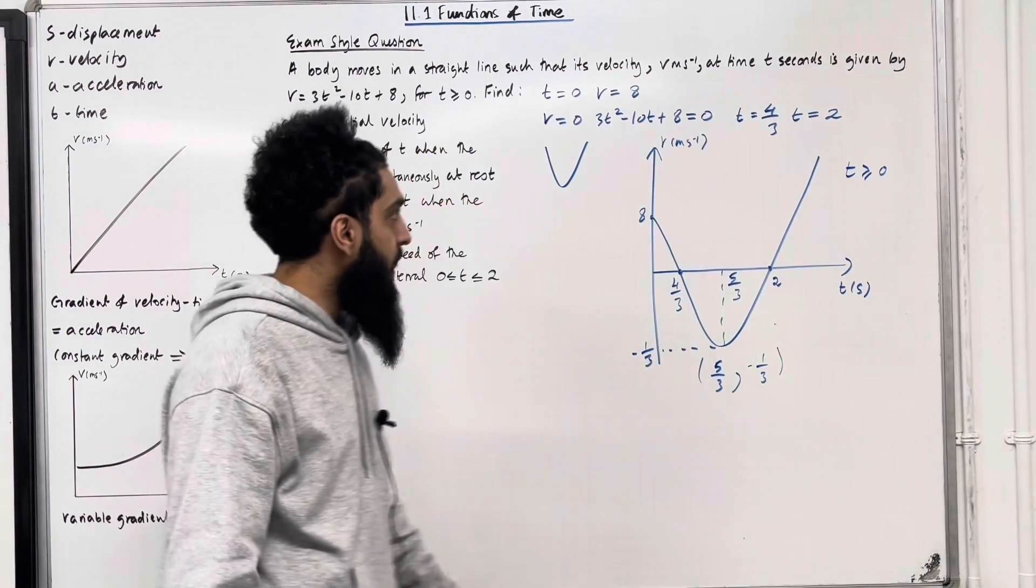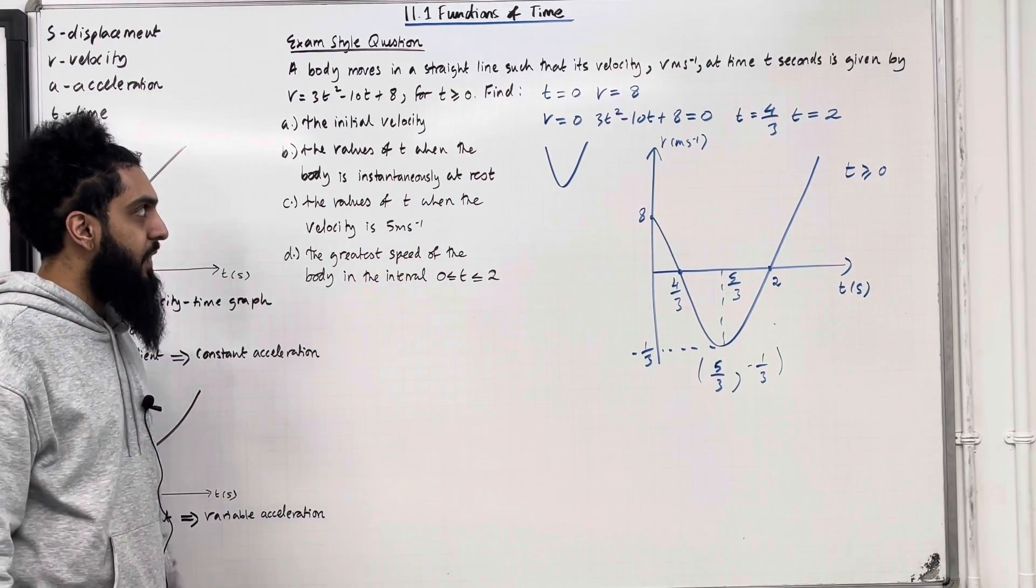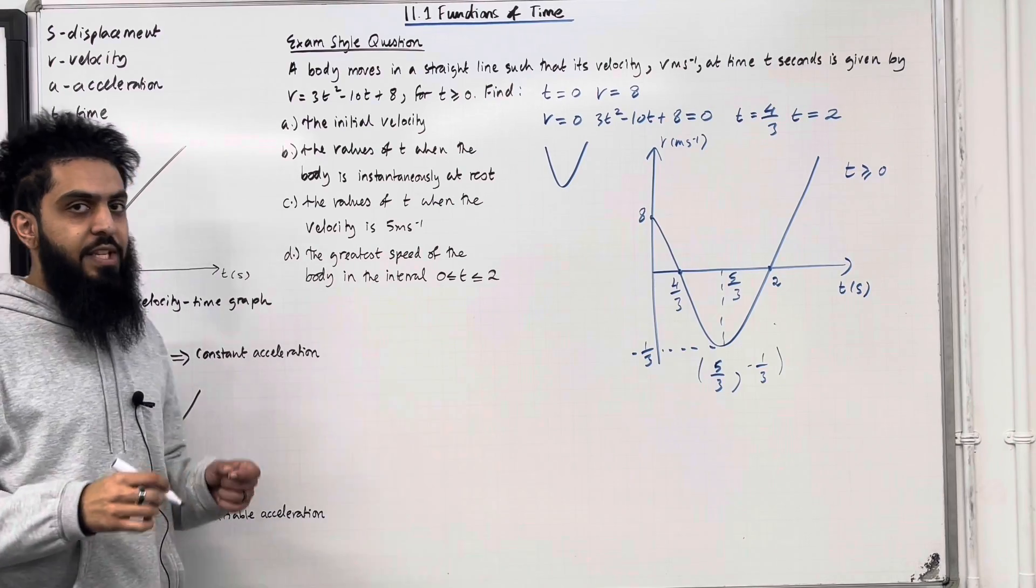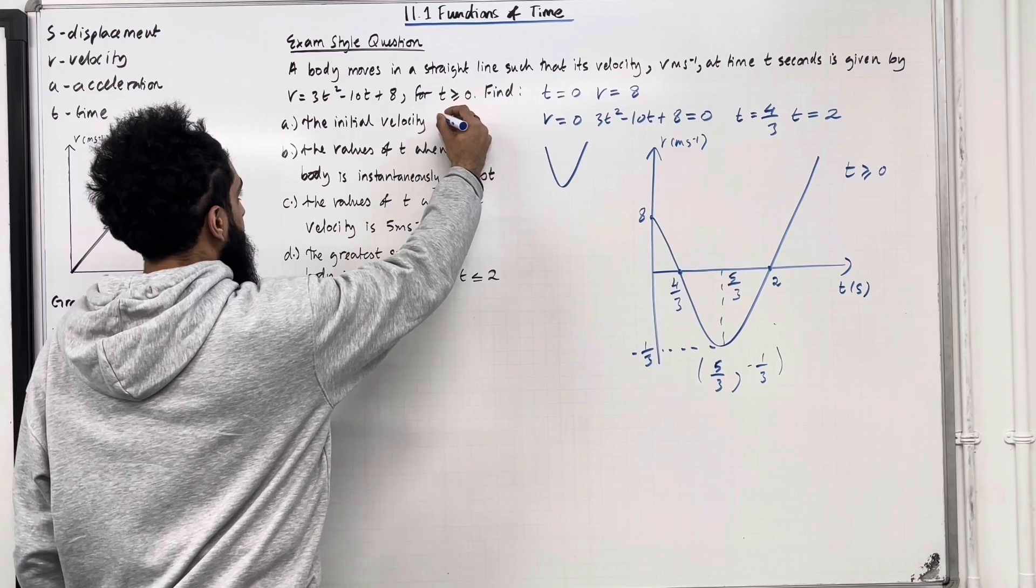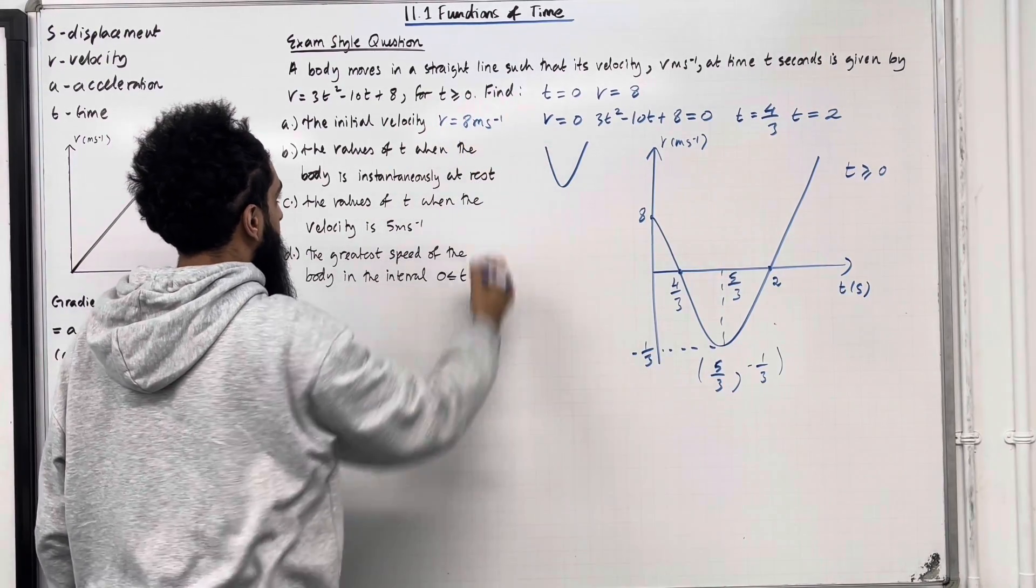Now part A of the question, I need to find the initial velocity, so the velocity when time t is equal 0. I've calculated this. It is v equal 8. So v equal 8 meters per second.